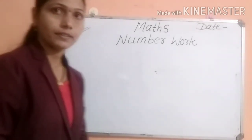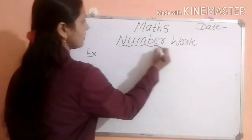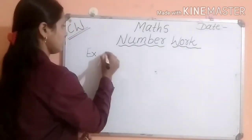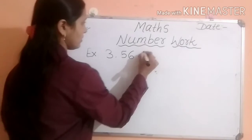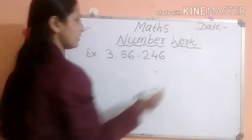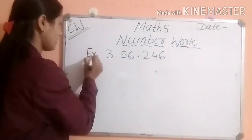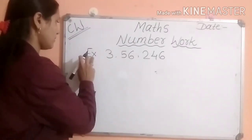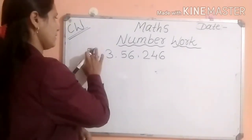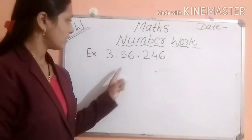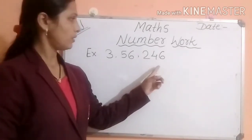Also, the number I will give you in words and that number you have to mention in the figure. Okay, now let us start. For example, there is a number here. Which number is this? Three lakh fifty-six thousand two hundred forty-six.